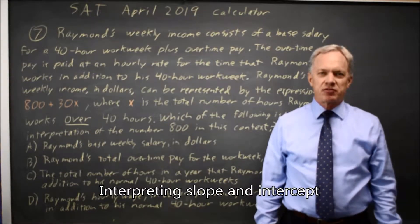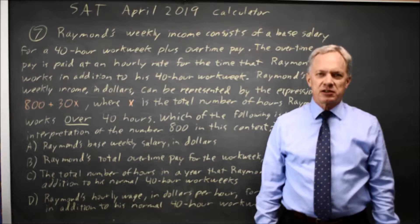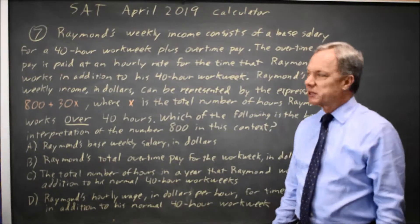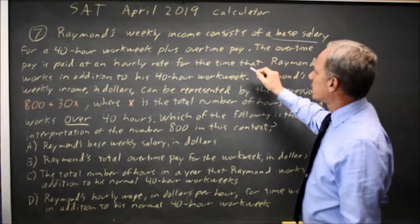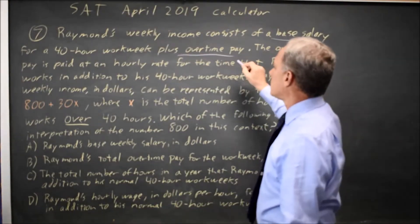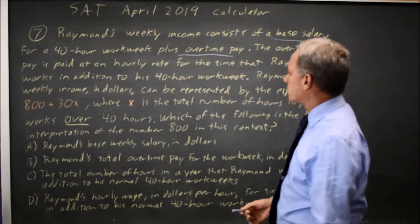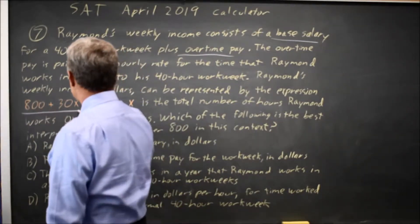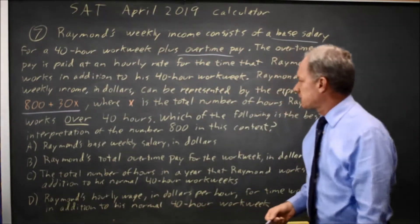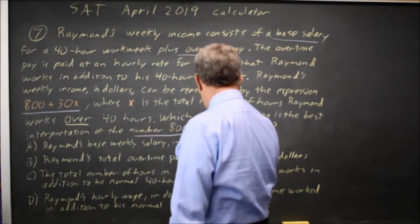This is Calculator Question Number 7 from the April 2019 SAT. The College Board gives us a paragraph describing the weekly pay for Raymond. We're told that he has a base salary for a 40-hour week plus overtime, paid at an hourly rate for time beyond the 40 hours. His weekly income is 800 plus 30X. The question is: what is the interpretation of the number 800 in this context?